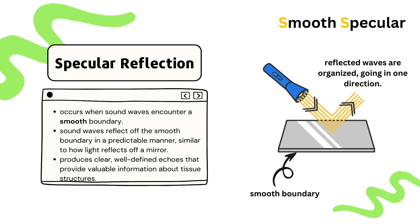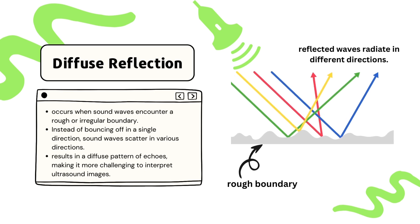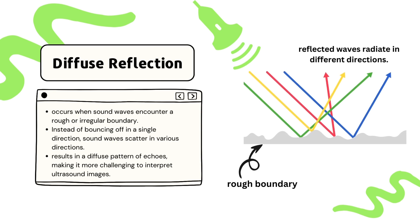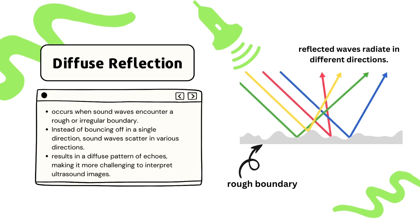On the other hand, diffuse reflection occurs when sound waves encounter a rough or irregular boundary. Instead of bouncing off in one single and organized direction, the sound waves are actually going to scatter in various directions, resulting in a diffuse pattern of echoes.